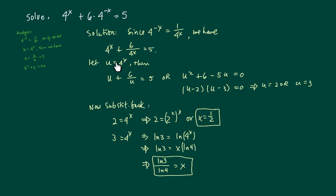Since x was related to u in this fashion, we're going to have to substitute back in to solve for x. The first one was pretty easy to solve because 2 equals 2 to the x, and you can see if x equals one half, then I have 2 equals 2.